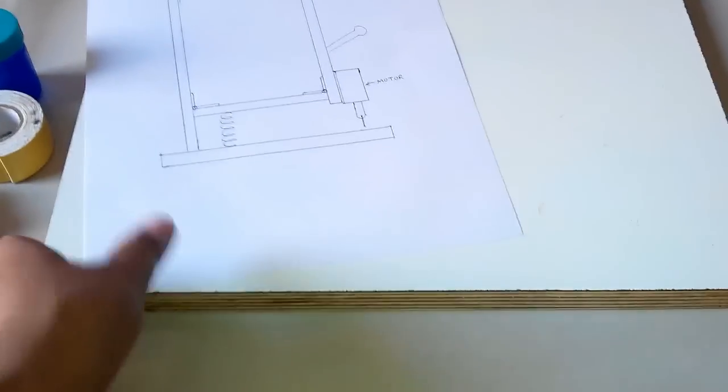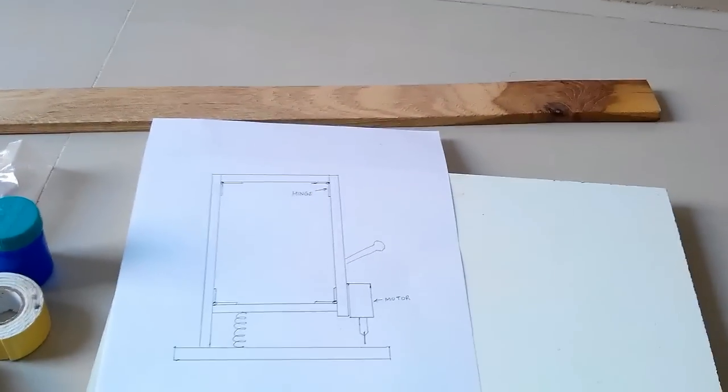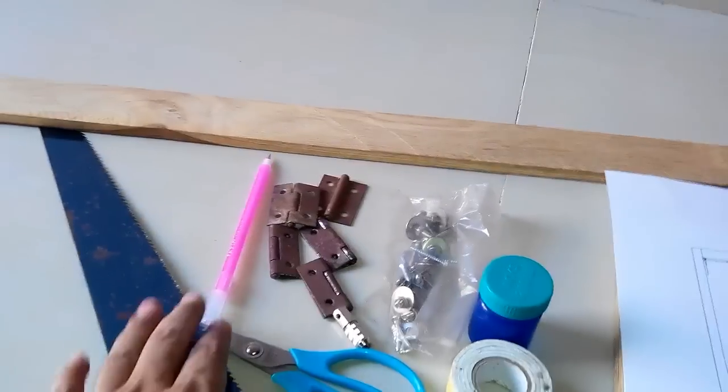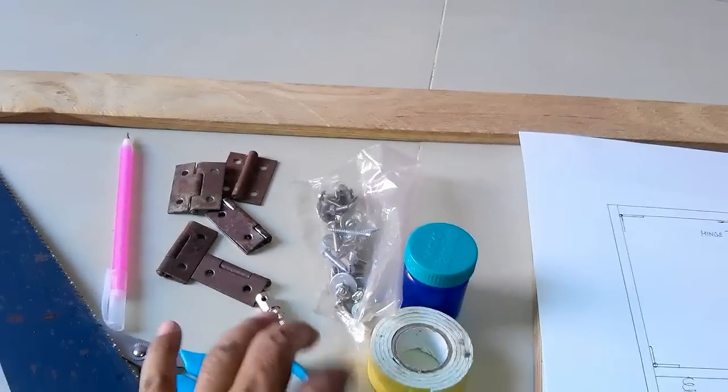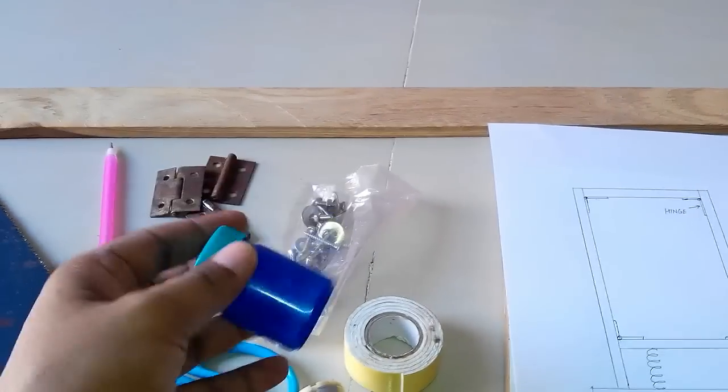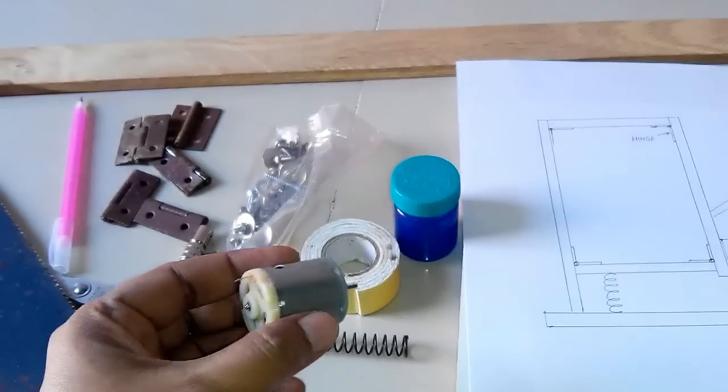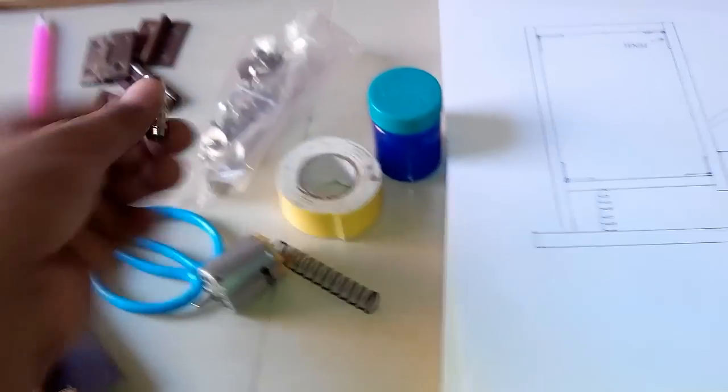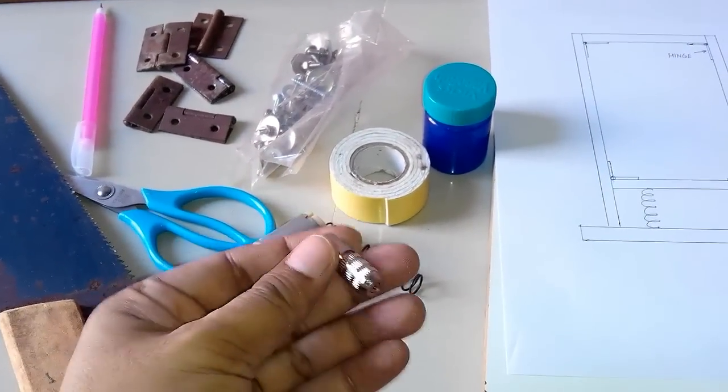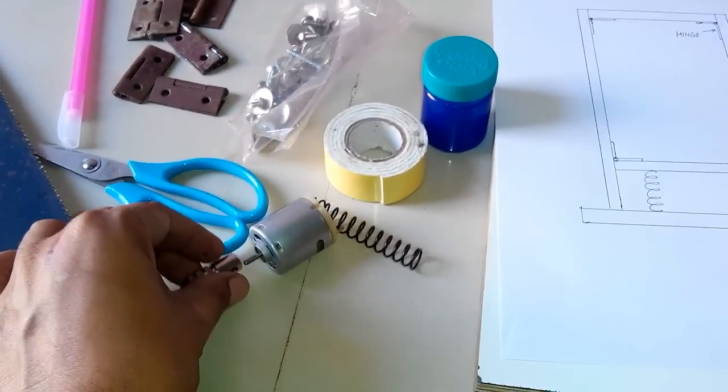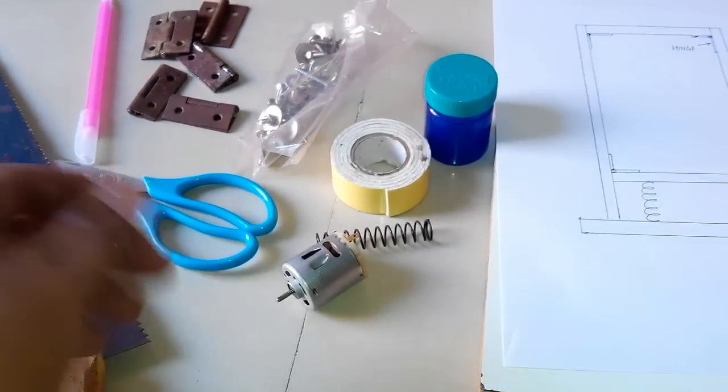You may see this wooden piece will be used as a base and this wooden strip will be used to make the frame. We have some hinges to connect all wooden pieces and some screws, a housing for this small DC motor, and also a bit holder which will connect with this motor. These are the tools.